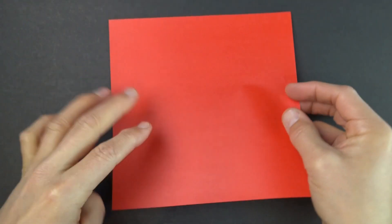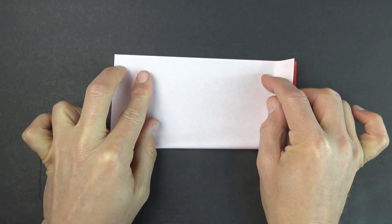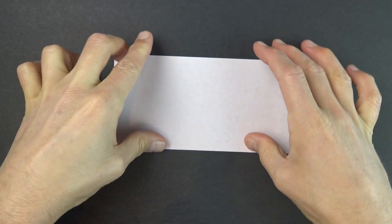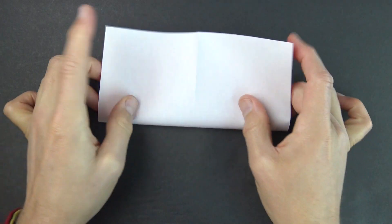Let's begin with the colored side up. Fold in half. Unfold, rotate, and fold in half in this direction.